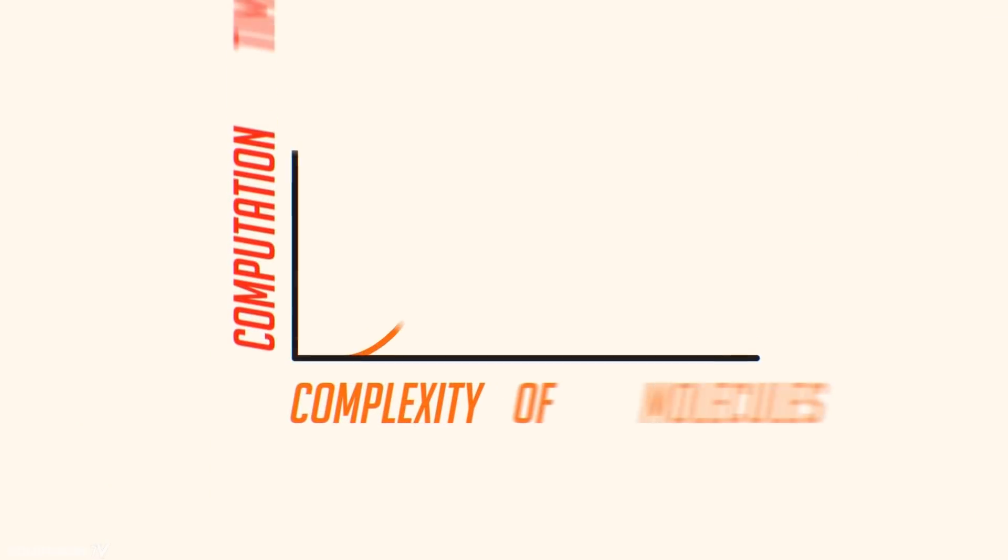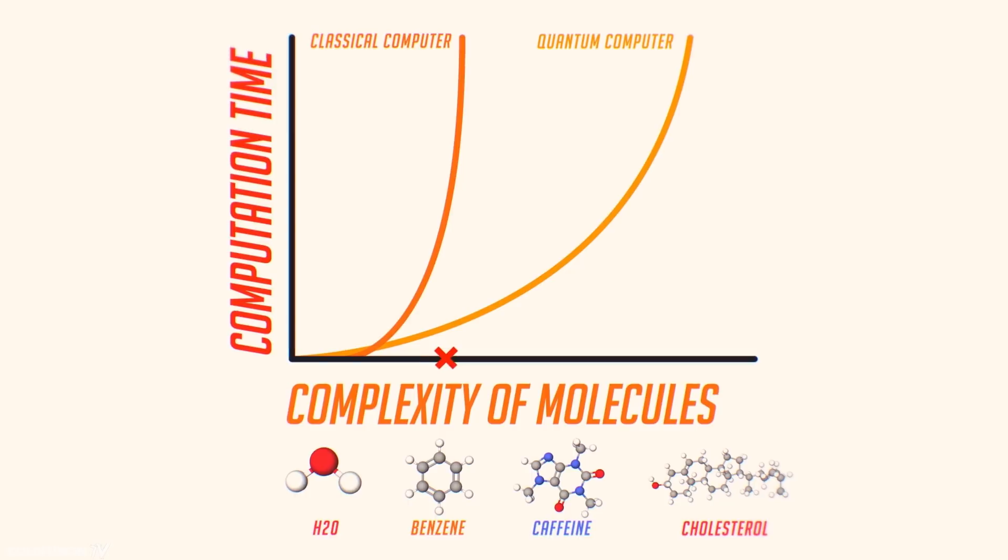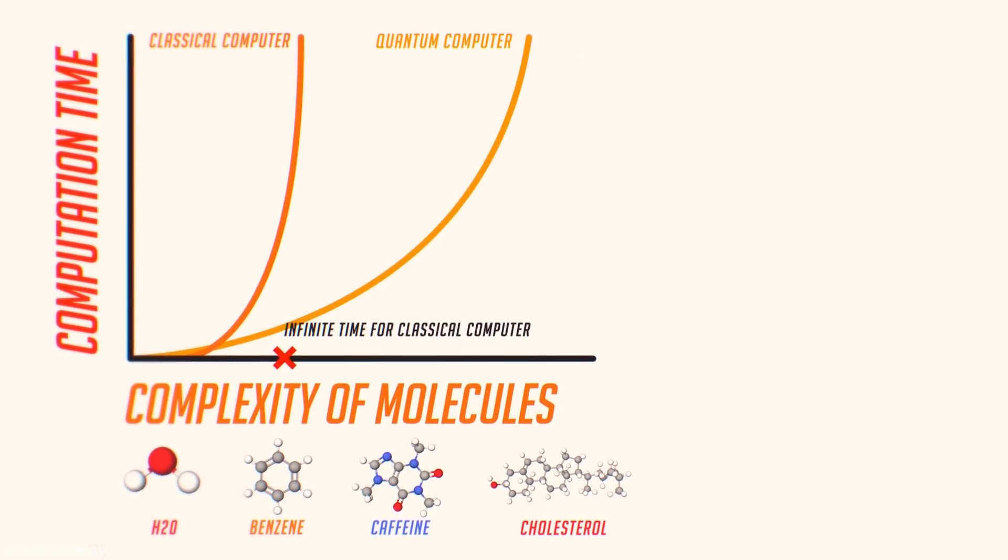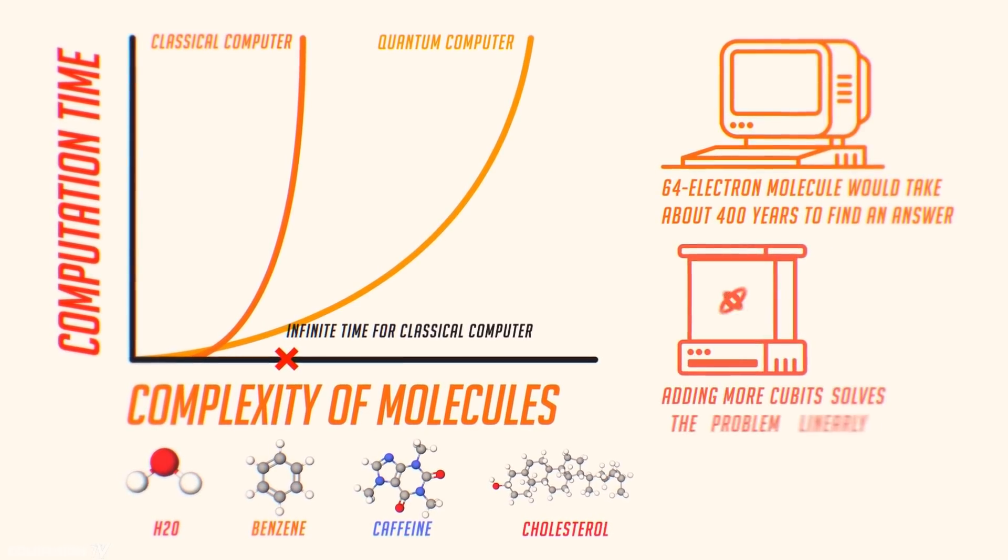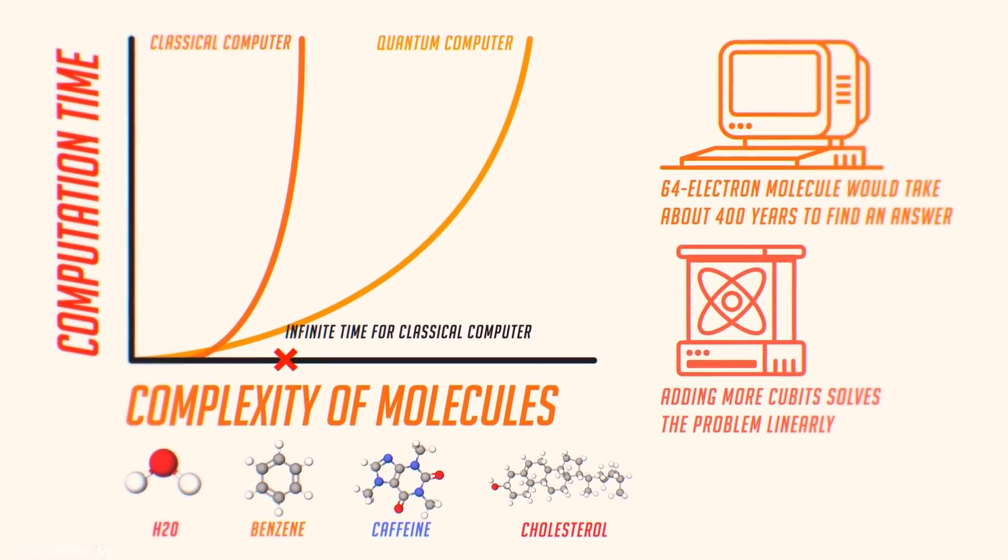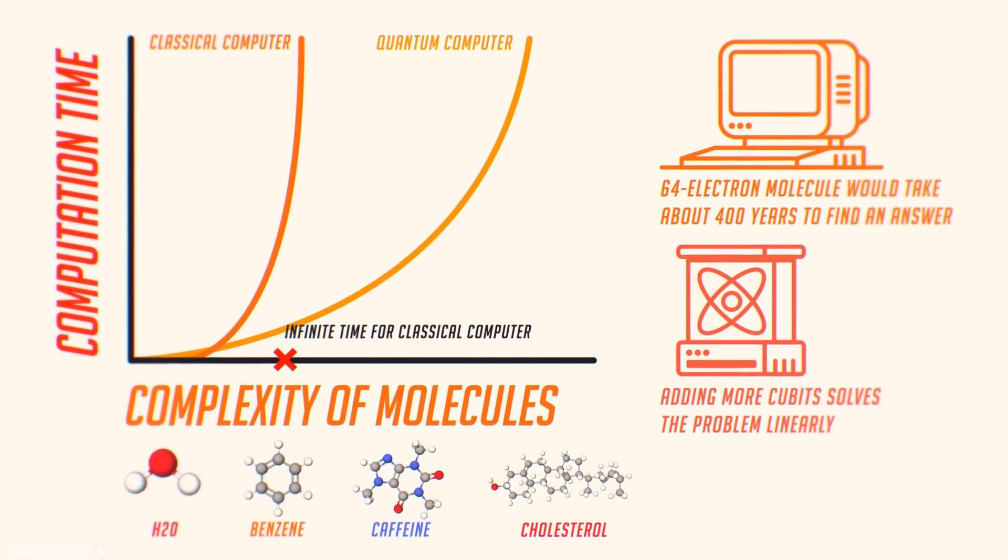Consider the case of modeling different molecules. As you can see, when we get to molecules a bit more complex than benzene, the computational time to model them approaches infinity. For a quantum computer, all you have to do is just add more qubits and the computational time scales linearly with the problem. So to solve this, we'd just simply add on another 50 qubits or so. For each qubit added, a quantum computer gets exponentially more powerful.